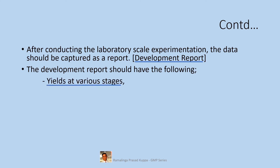Yields at various stages: outputs with a specific lower and upper range should be provided. The range may vary in commercial scale, but this range will be the base for the commercial outputs. The intermediate stage and final stage yields also should be captured.